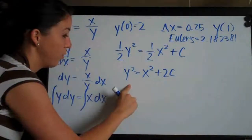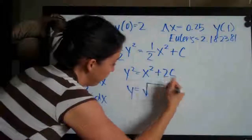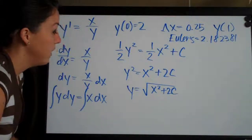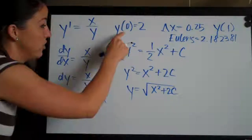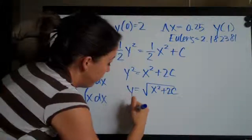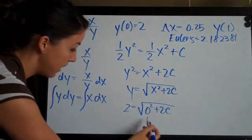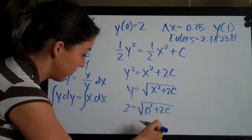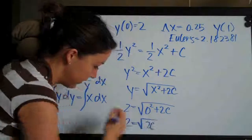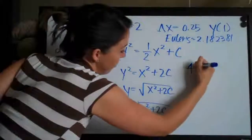We're going to take the square root of both sides of the equation to get y on its own. So we'll get y equals the square root of x squared plus two c. And now what we'll do is plug in the initial condition y(0) equals 2. So we'll plug in zero for x and two for y. So we'll get two equals the square root of zero squared plus two c. This zero is going to cancel, so we'll be left with two equals the square root of two c. We can square both sides to get rid of the square root since we're solving for c. And we'll get four equals two c.